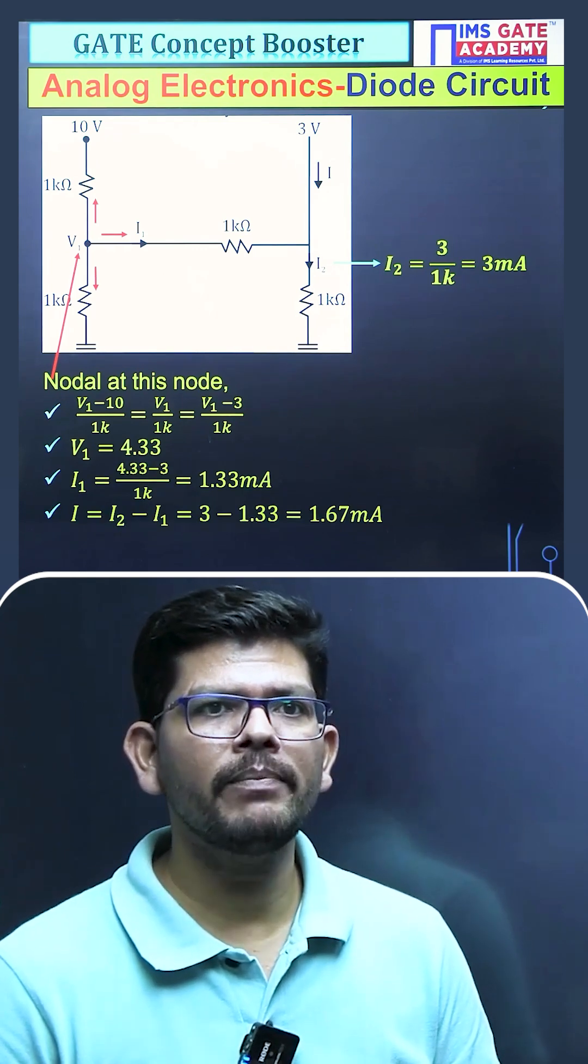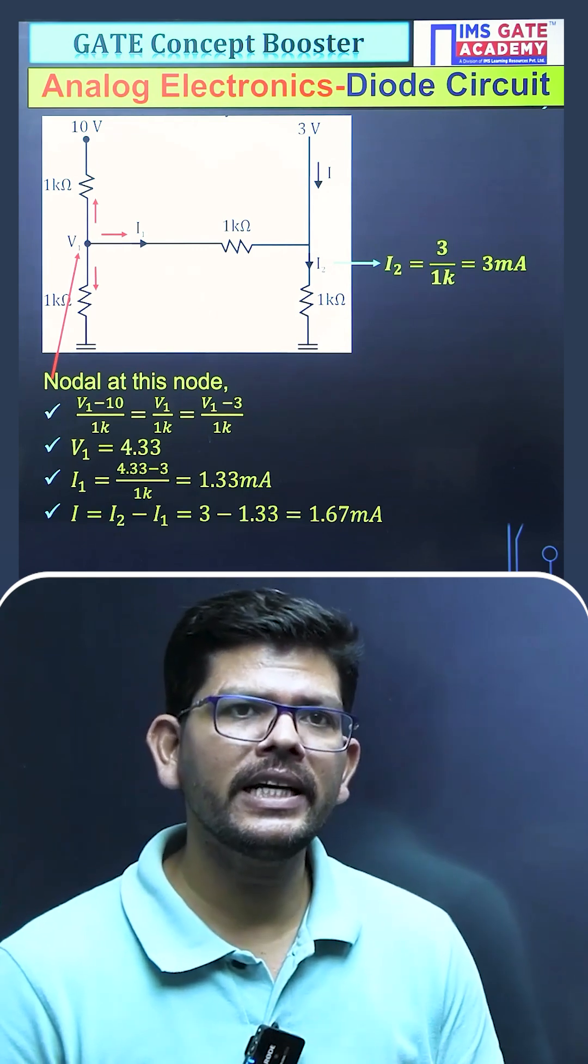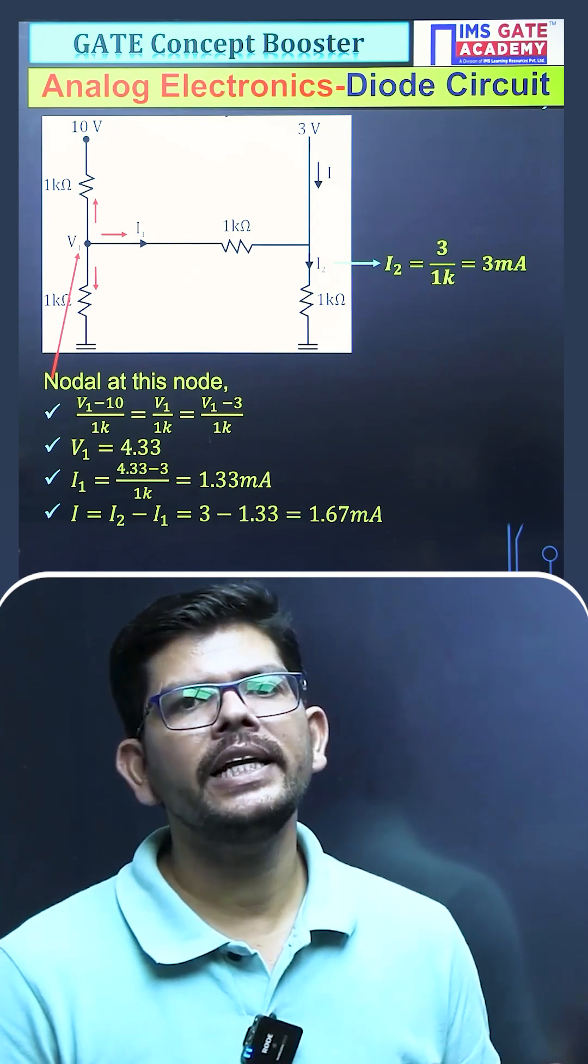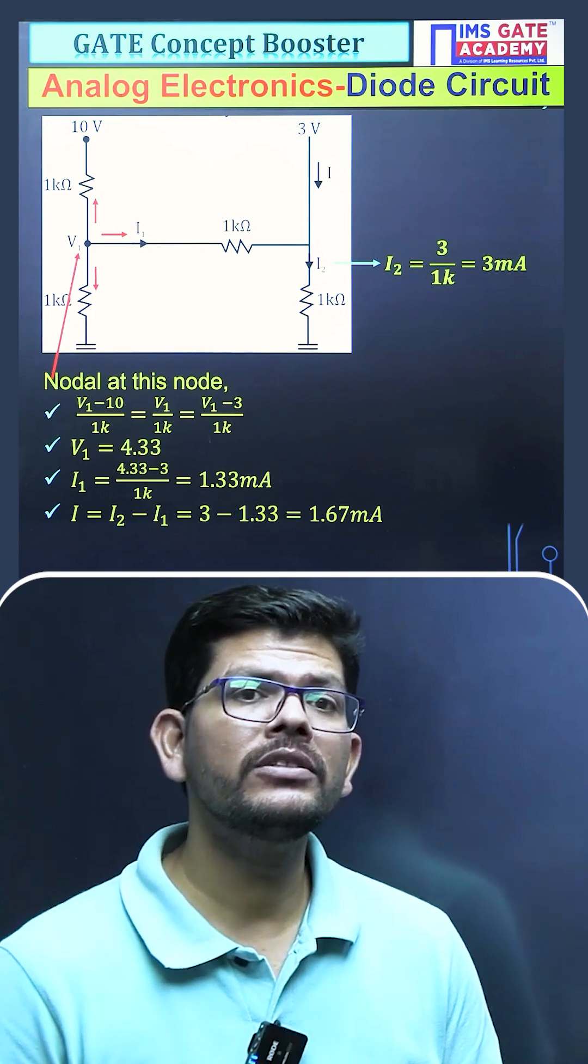Once you apply the KCL here, you will get the current I2, which we have to calculate as I2 minus I1 and it will be 1.67mA.